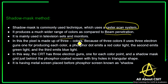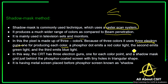In shadow mask, each pixel is made up of three colors, which is why it uses three electron guns — one for producing each color. In beam penetration only one electron gun is used, but in the shadow mask technique three electron guns are used. One phosphorous dot emits red color, the second emits green light, and the third emits blue light.